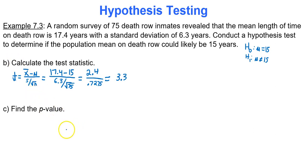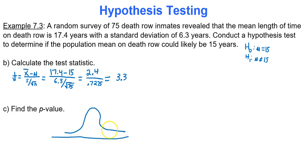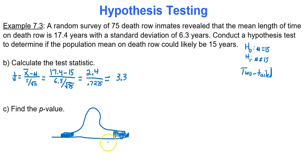Now we have to find the p-value. The p-value is the sum of the areas of your critical regions. Since the alternative hypothesis is not equal to, this is a two-tailed test. Shade the right tail and shade the left tail of your bell curve — the sum of these two shaded regions will be your p-value.